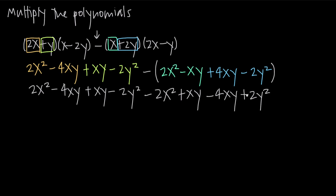Now that everything's outside of the parentheses, we look for like terms. We have positive 2x squared and negative 2x squared — those cancel. We also have negative 2y squared and positive 2y squared — those cancel too. So we've eliminated those terms. What's left are the xy terms: negative 4xy, plus xy, plus xy, minus 4xy. Negative 4 plus 1 gives negative 3, and then negative 3 plus 1 gives negative 2, and negative 2 minus 4 gives us negative 6xy.